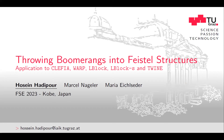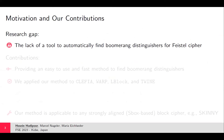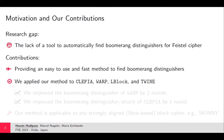Hello everyone. I am Hossein Hadipour from Graz University of Technology. When we started this work in the first year of my PhD, there was no tool to find boomerang distinguishers for Feistel ciphers. We decided to fill this gap and developed a very easy-to-use and fast method to find boomerang distinguishers for Feistel ciphers. We applied it to CLEFIA, WARP, L-Block, and TWINE, obtaining a series of improved results.